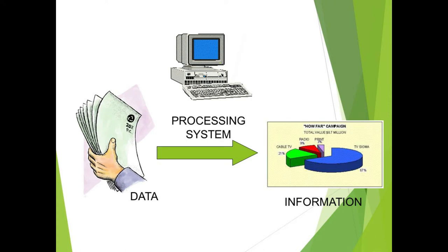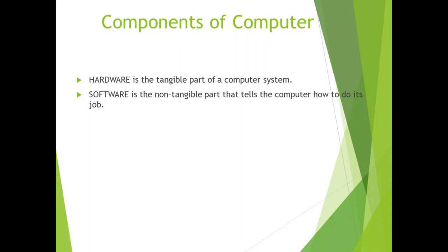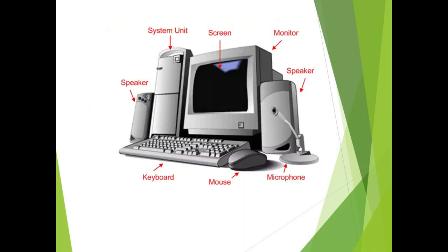Now we will start with our first unit's first topic: Basic Computer Organization. Basic computer organization covers what a computer actually is, computer hardware and software, categories of software and hardware, and what computer memory is. A computer is an electronic machine that follows a set of instructions to process data and convert it into information. It is an electronic device which performs arithmetic and logical operations.